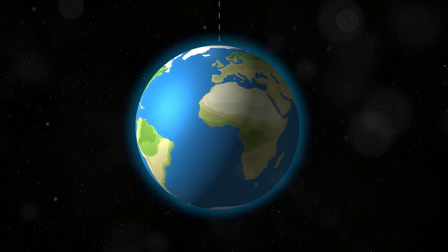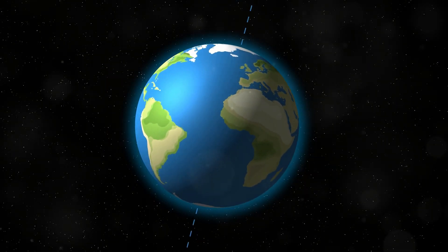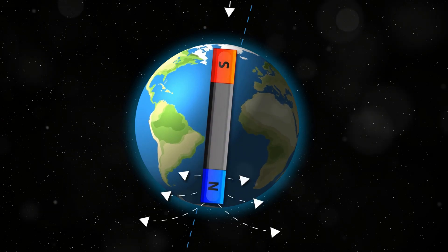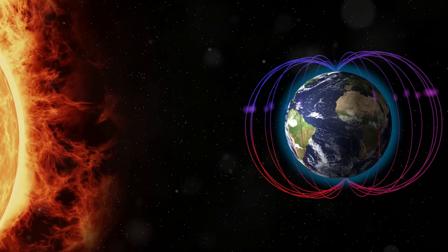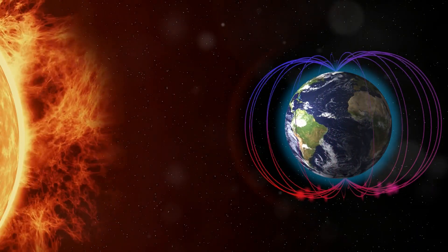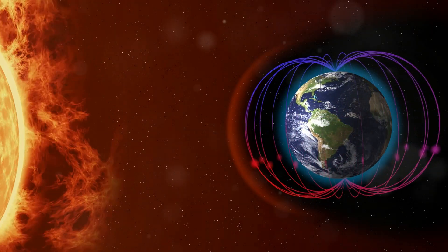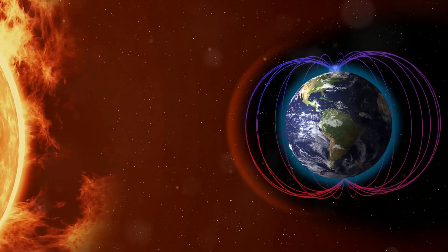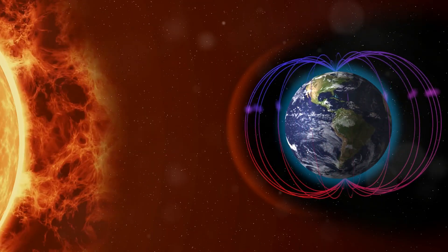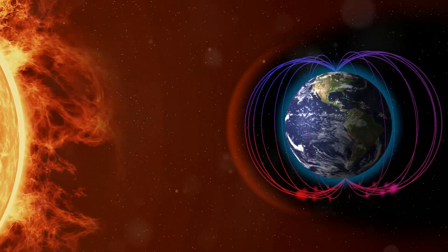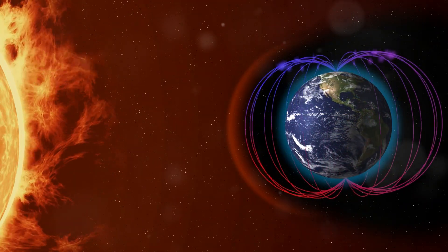The field has two primary poles, north and south, and stretches far into space. It is vital for the protection of life on Earth as it shields the planet from harmful solar radiation and the solar wind, a stream of charged particles from the sun. Without this magnetic shield, solar wind would strip away the atmosphere, making Earth much less hospitable for life.